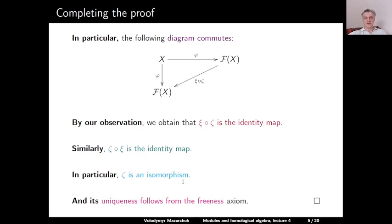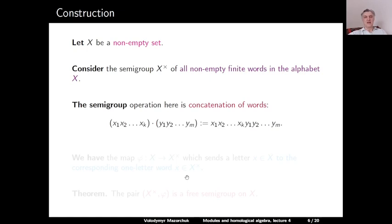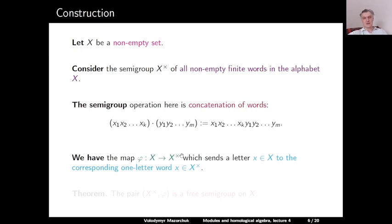Now let us discuss the construction of free semigroups. Let X be a non-empty set. Consider the semigroup X⁺ of all non-empty finite words in the alphabet X. The semigroup operation is concatenation of words. If we have a word x₁, x₂, …, xₖ and a word y₁, y₂, …, yₘ, we concatenate them to get x₁, x₂, …, xₖ, y₁, y₂, …, yₘ. We also have a natural map from X to X⁺ which sends a letter x to the corresponding one-letter word in X⁺.